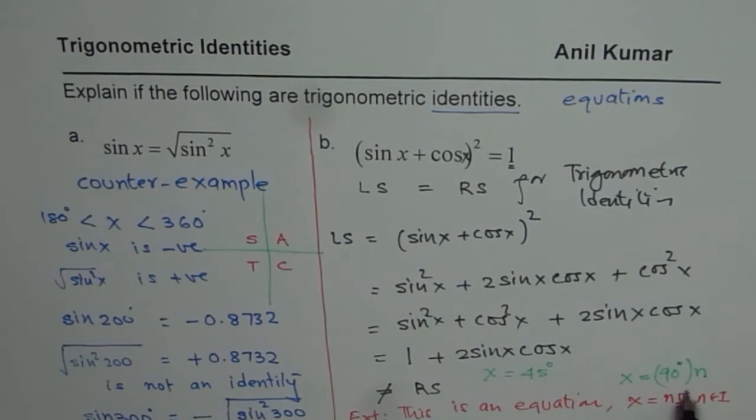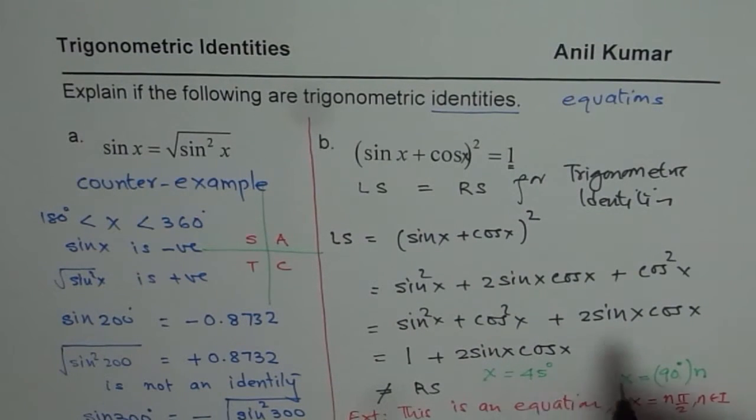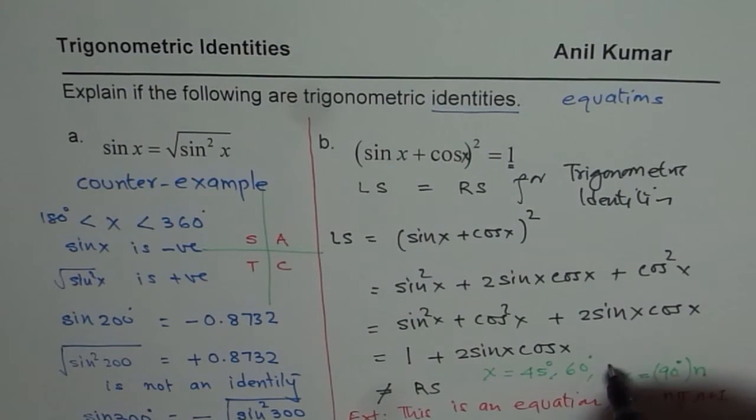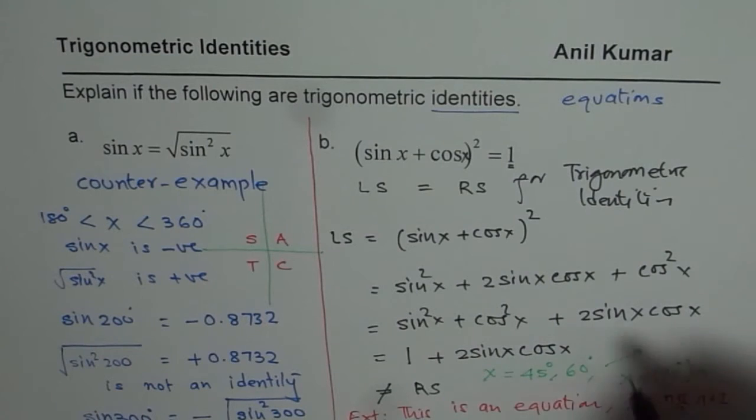But not for any other value. If I write x equals to 45 degrees, 60 degrees or so on, that will not be true. So these are called counter examples. These will be counter examples.